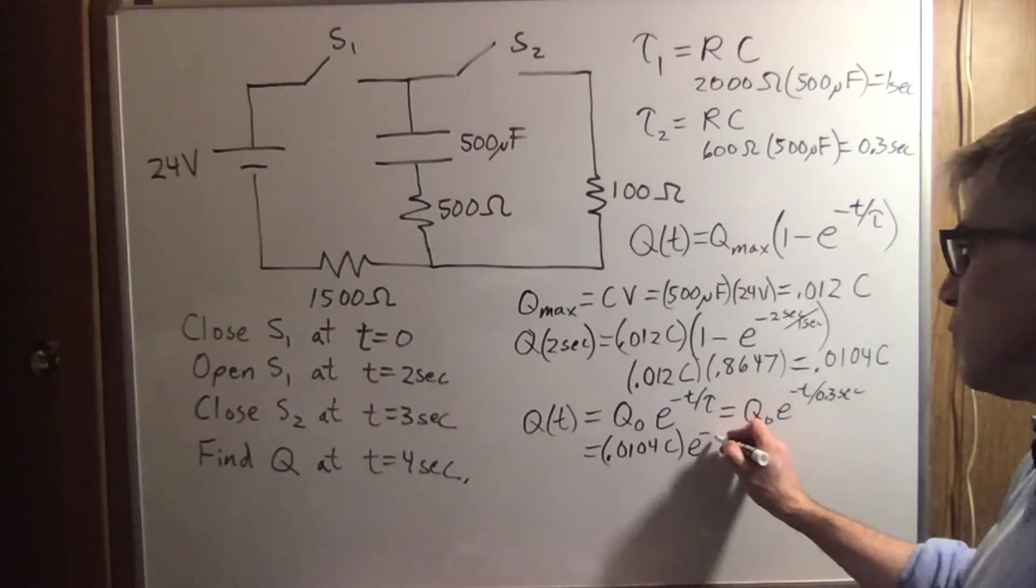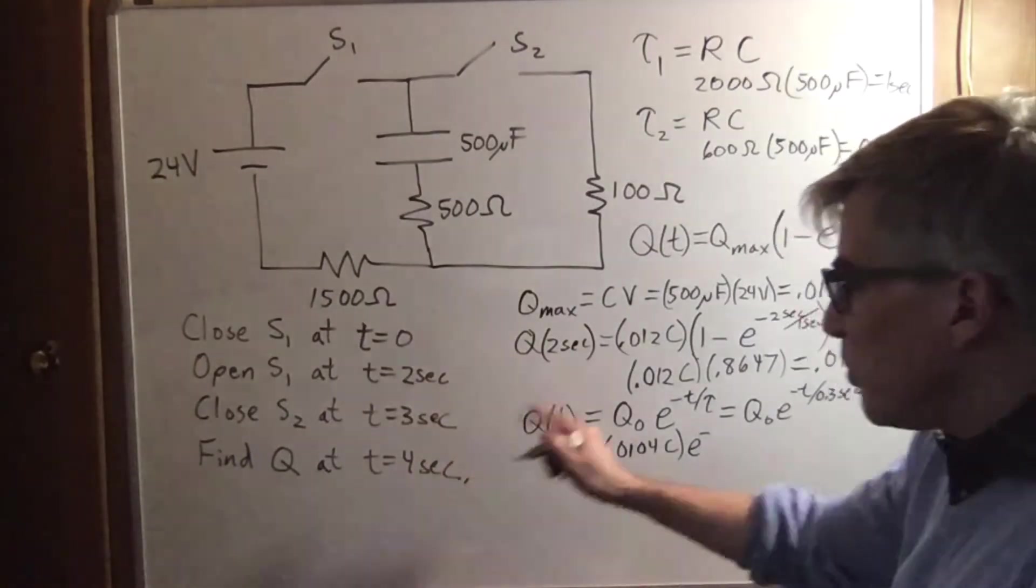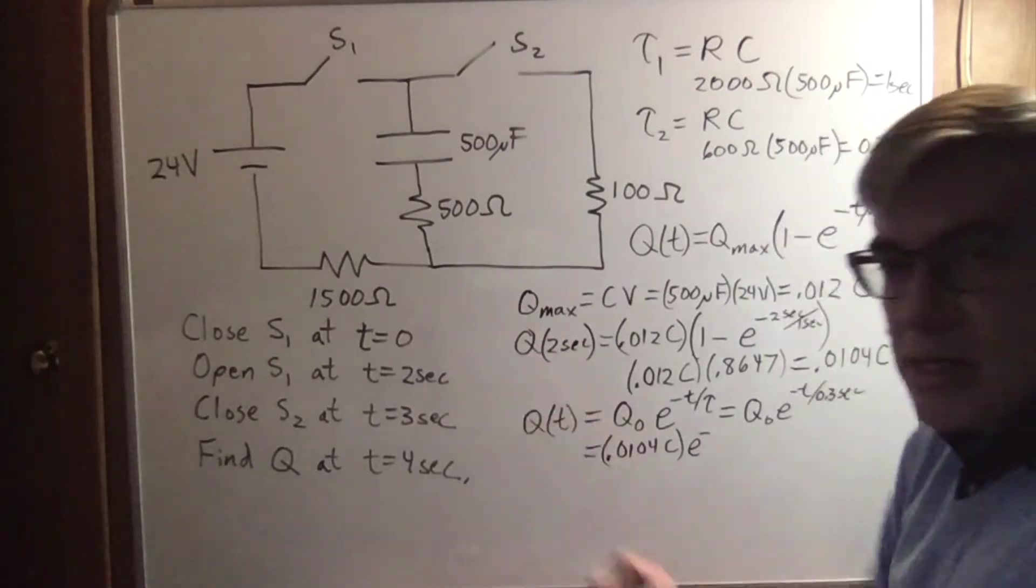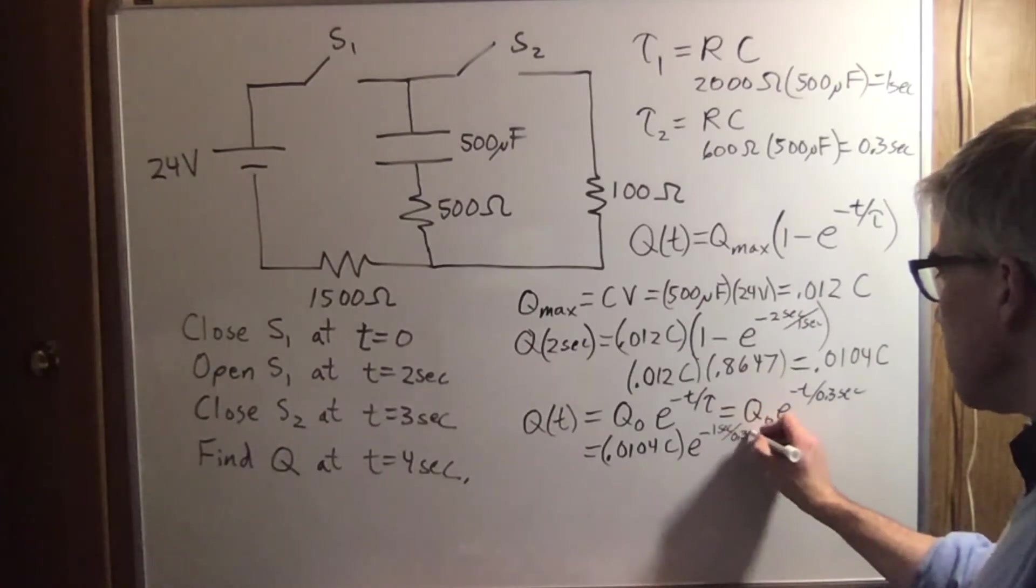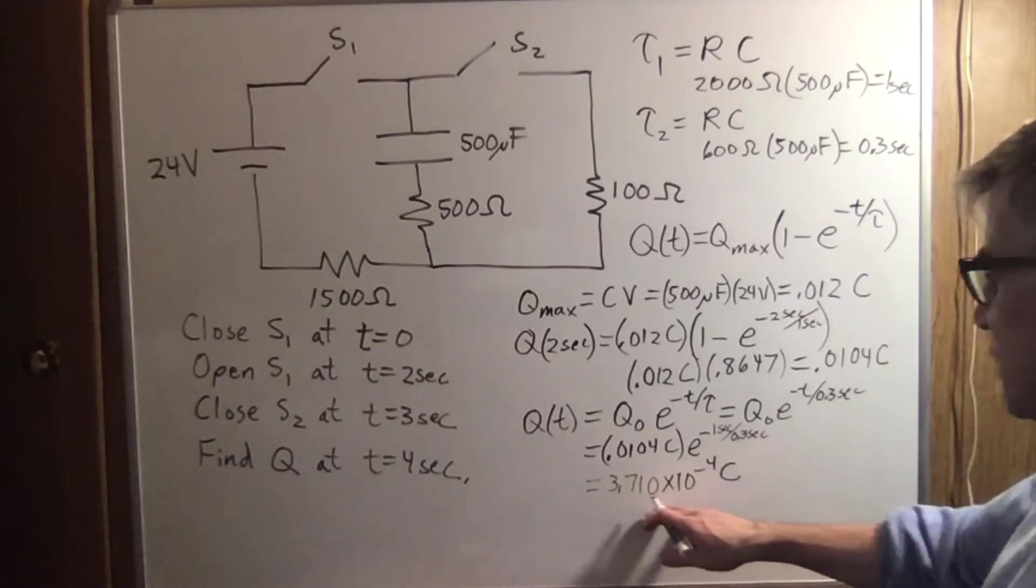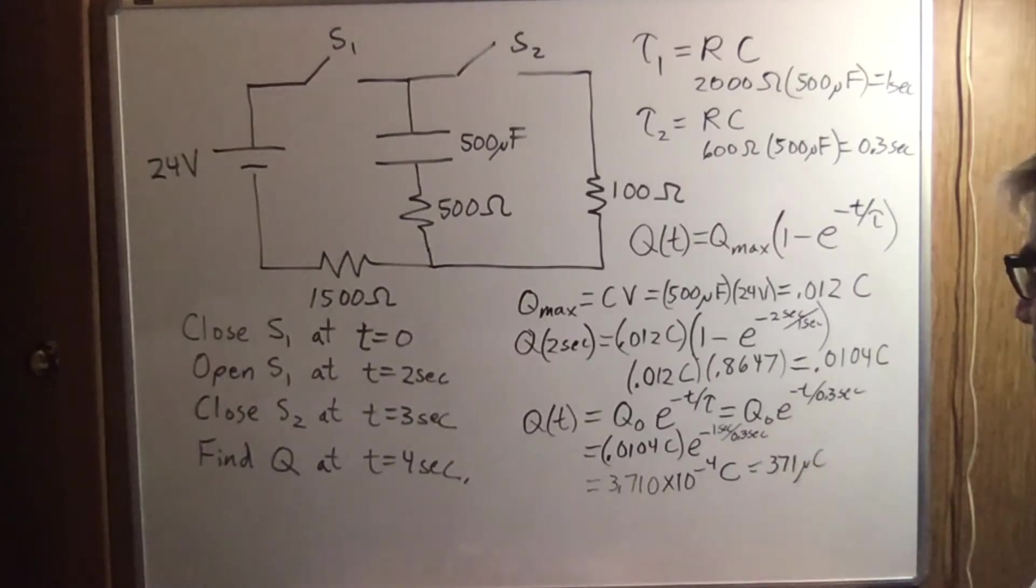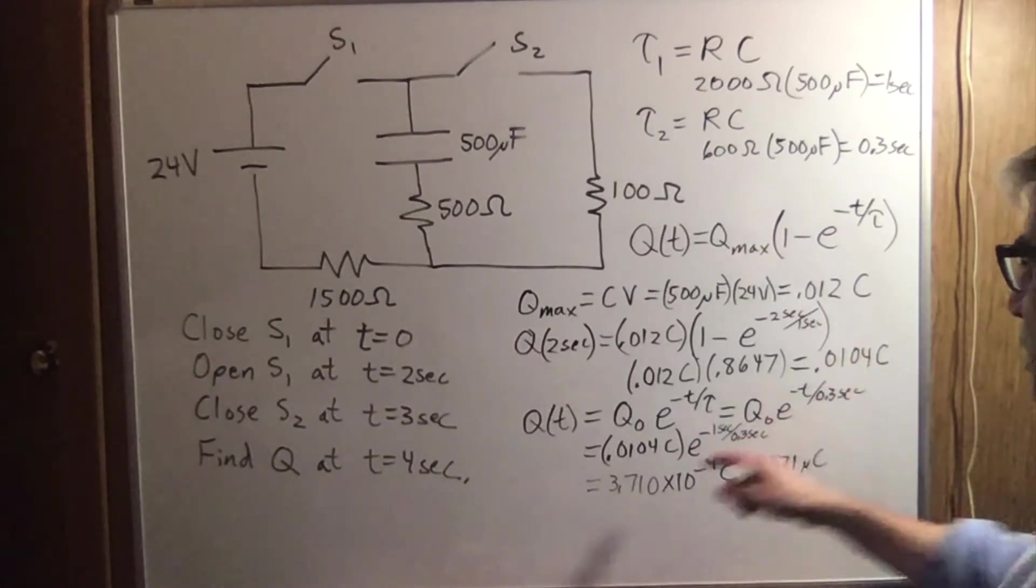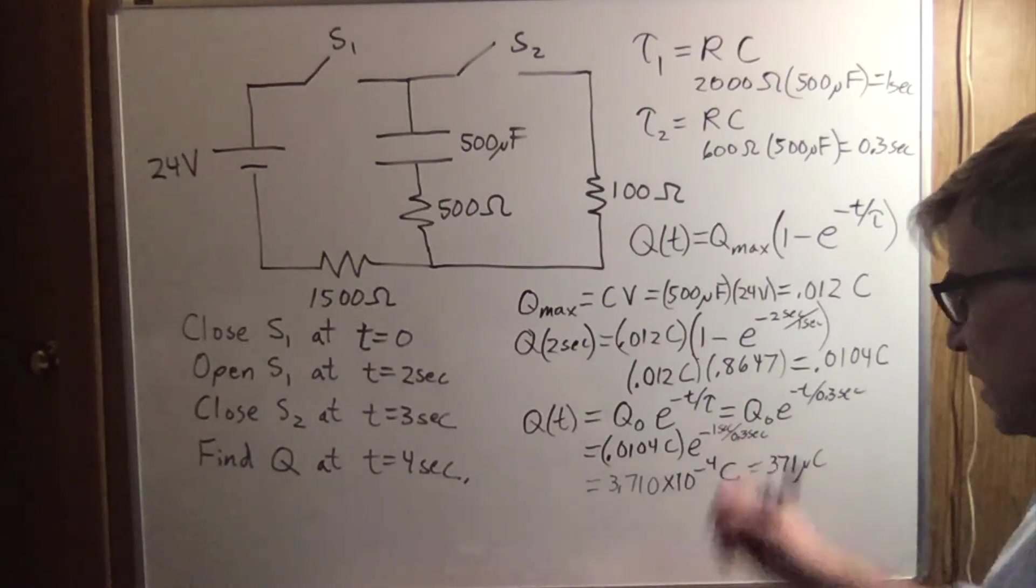And so we have e to the negative one second. t is one. I know the time on the clock is four, but the amount of time it has been since you close the switch is one second. It's had one second's worth of discharging. So that's e to the minus one second over 0.3 seconds, which is 3.71 times 10 to the negative four coulombs or 371 microcoulombs. That's how much charge is left from the 0.01 coulombs because so much of it went away because it decayed for three time constants. That's enough to get the vast majority of the charge gone.